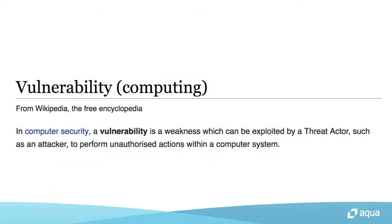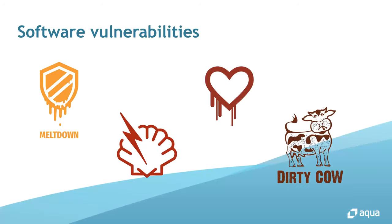First of all, what is a vulnerability? According to Wikipedia, a vulnerability is a weakness which can be exploited by a threat actor, such as an attacker, to perform an unauthorized action within a computer system. There are many software vulnerabilities, such as Meltdown, Shellshock, Heartbleed, and DirtyCow. Heartbleed affected OpenSSL, and DirtyCow affected the Linux kernel. You need to know whether these vulnerabilities affect your environment, and if they do, you have to deal with them immediately — otherwise an attacker can exploit your system.